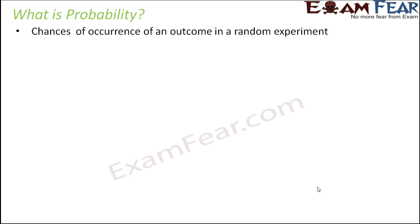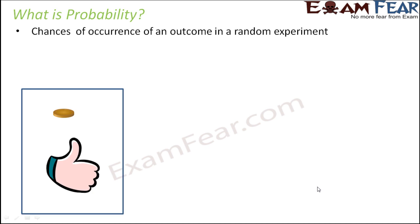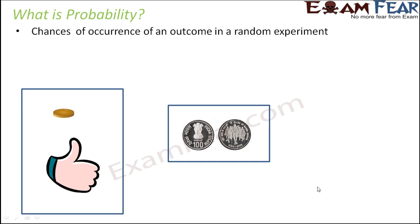Now what exactly is probability? It is the chances of occurrence of an outcome in a random experiment. When we are tossing a coin, that is a random experiment for us. And what could be the outcome? The outcome could be a head or a tail. So head and tail are two possible outcomes. What is the chance that a head might come? 50%. There is a 50% chance that a head might come, a 50% chance that a tail might come. So how much is the chance of occurrence of a particular outcome in any random experiment? That is what we call probability.